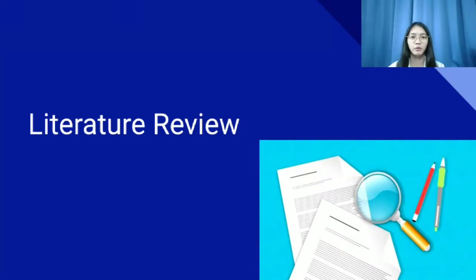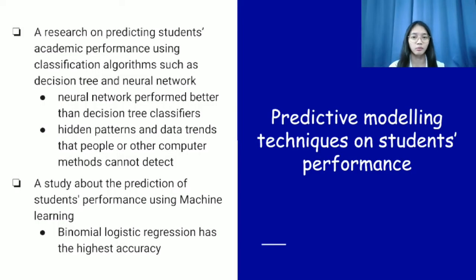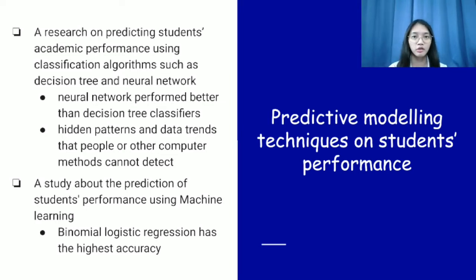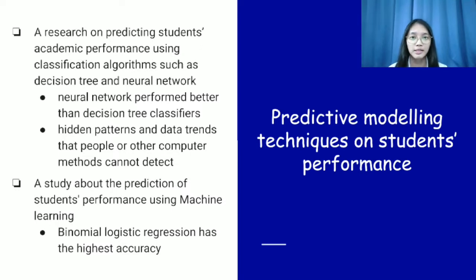I will continue with the literature review. We have reviewed six articles in our project. The first article is about predicting students' academic performance using decision tree and neural network. The results show that neural network performs better than decision tree classifiers, because it can find hidden patterns and data trends that cannot be detected by people or other computer methods. The next article is about the prediction of student performance using machine learning, such as binomial logistic regression, decision tree, entropy, and the K-nearest neighbor classifier.